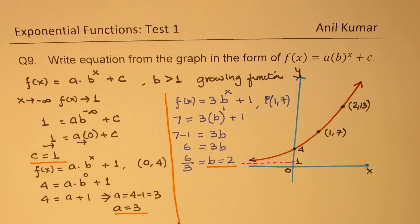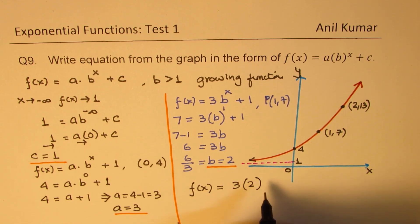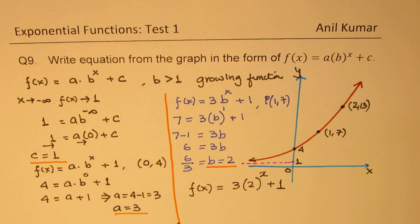And now we can write down our function. So the result is f(x) is equal to 3(2)^x + 1. So that becomes the solution. This is the equation which represents the given graph. So I hope the steps are absolutely clear.